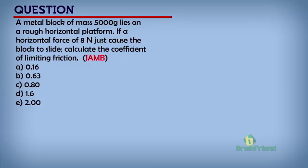Now let us try our hands on a simple question. A metal block of mass 5,000 grams lies on a rough horizontal platform. If a horizontal force of 8 Newtons just causes the block to slide, let us calculate the coefficient of limiting friction. The options are: A) 0.16, B) 0.63, C) 0.8, D) 1.6, or E) 2.